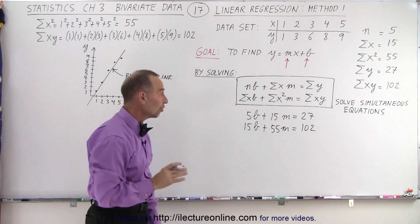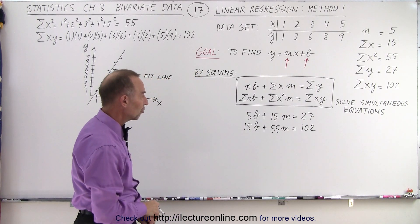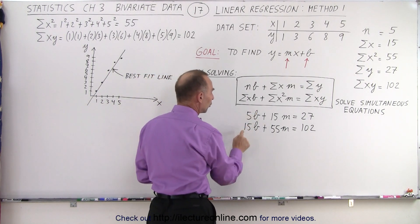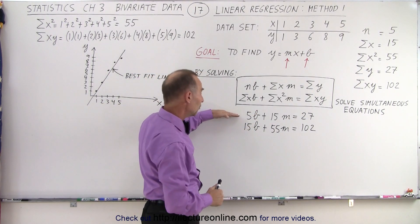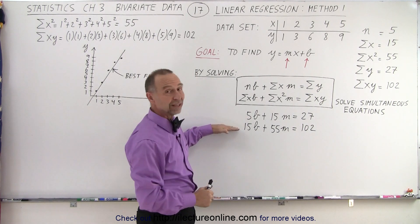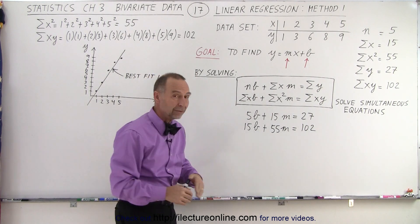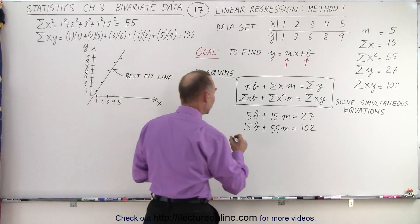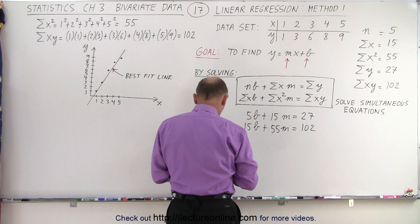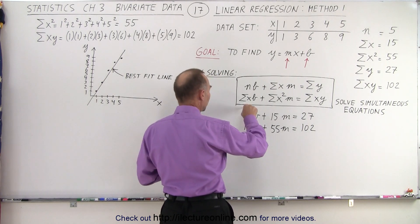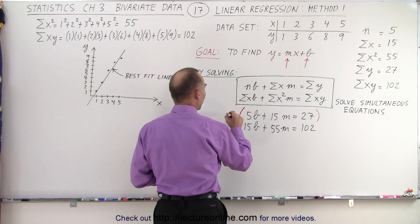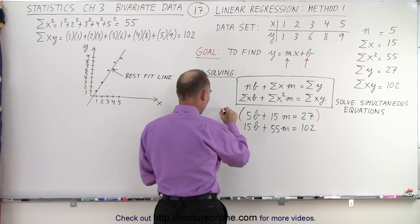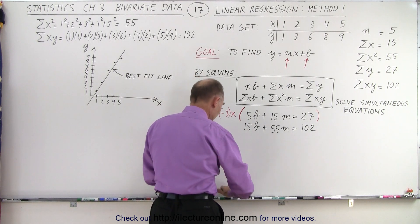So now what it means is we need to solve those two equations simultaneously. Now I notice that 5b is 1 third of 15b. So if I multiply this equation by negative 3 and add it to the second equation, the b's would drop out. I would eliminate one of the two variables, and that way I can find m. So let's do that. We're going to multiply, and I'll use a different color. I'm going to multiply both sides, the left and the right side, by negative 3.